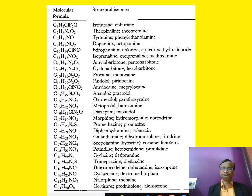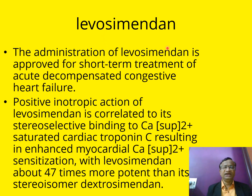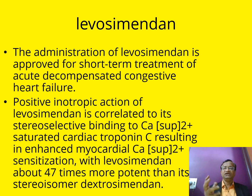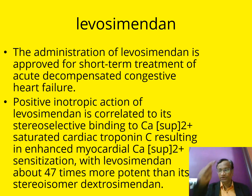Levosimendan is a cardiac tonic drug approved for short-term acute management of decompensated congestive heart failure. It comes as the levo isomer and is 47 times more potent than its dextro form (dextrosimendan). After this topic, when you see a name like levocetrizine, you will understand that what is inside is the levorotatory isomer of cetirizine.